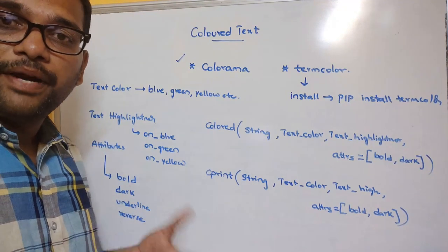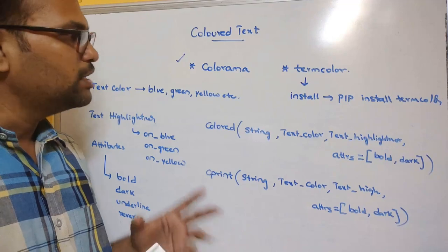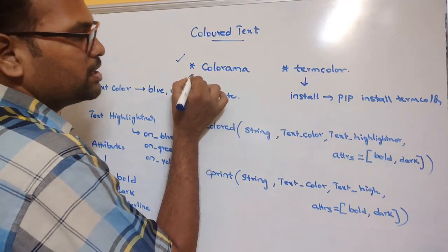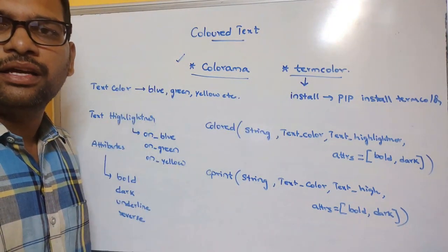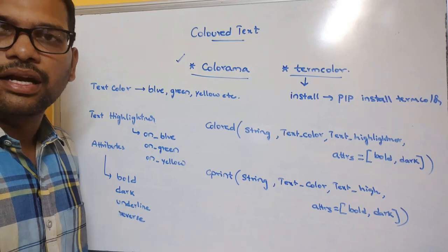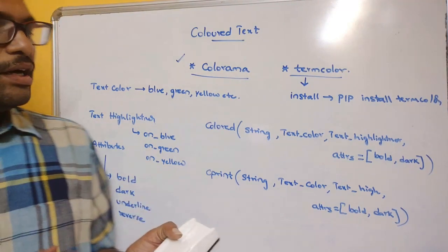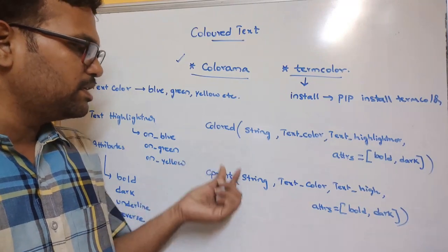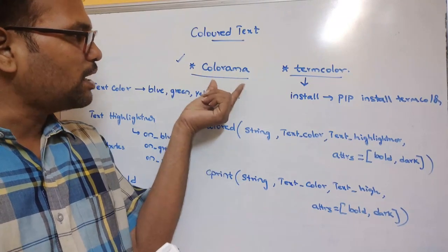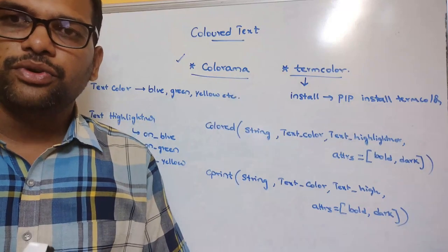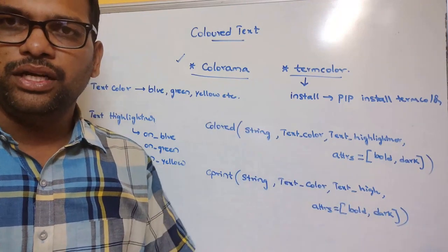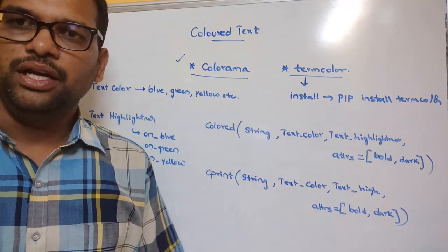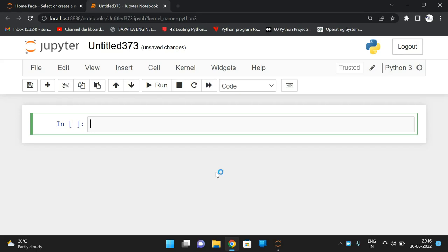These are the two different ways to print text in different colors in Python using two modules: colorama and termcolor. Let's move to the interpreter and demonstrate each method — the colored method, cprint method, colorama module, and termcolor module — by executing small programs.